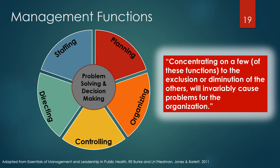There are five main management functions: planning, organizing, controlling, directing, and staffing. The leader or manager in each of these functions needs to problem-solve and make decisions. Almost everything a manager does falls into one or more of these functions. Managers must be adept at all five. As the book Essentials of Management and Leadership in Public Health states: concentrating on a few of these functions to the exclusion or diminution of the others will invariably cause problems for the organization. Further discussion of these functions will be covered in other talks of the North Dakota Public Health Training Network.